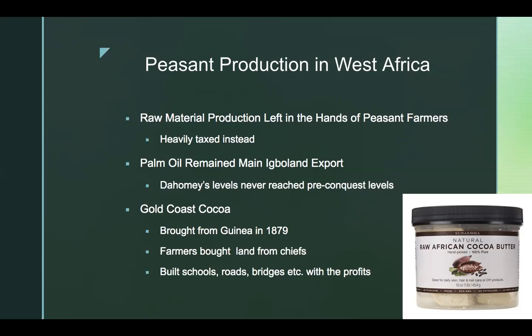Palm oil remained the main export out of Igboland, while groundnut production in Senegal also expanded. But just to show the impact of colonialism — even as palm oil remained the main Igbo export, it never reached the level of its pre-colonial production, because of the disruption caused by the European colonialists.